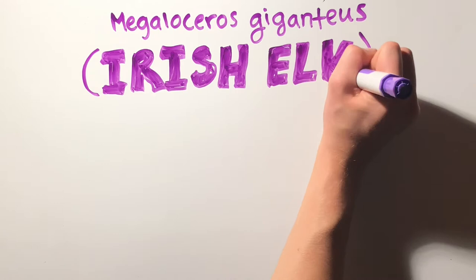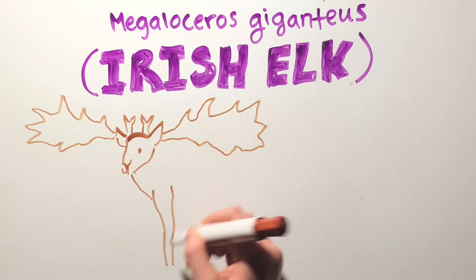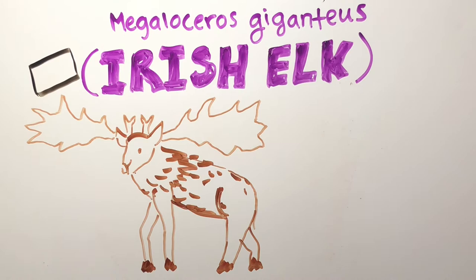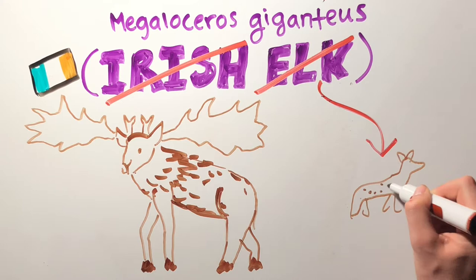Their common name is misleading, however, because the elks were not only found in Ireland, but all across Europe, in northern Africa, and parts of China. They are also not actually related to any living species of elk. Their closest relative is the common fallow deer.